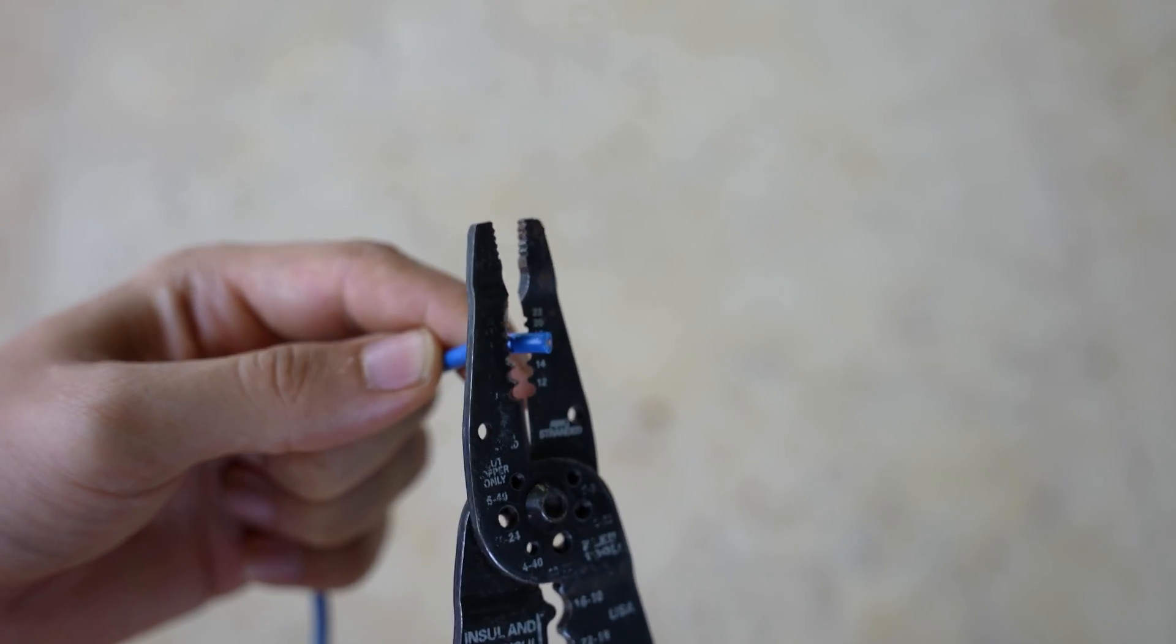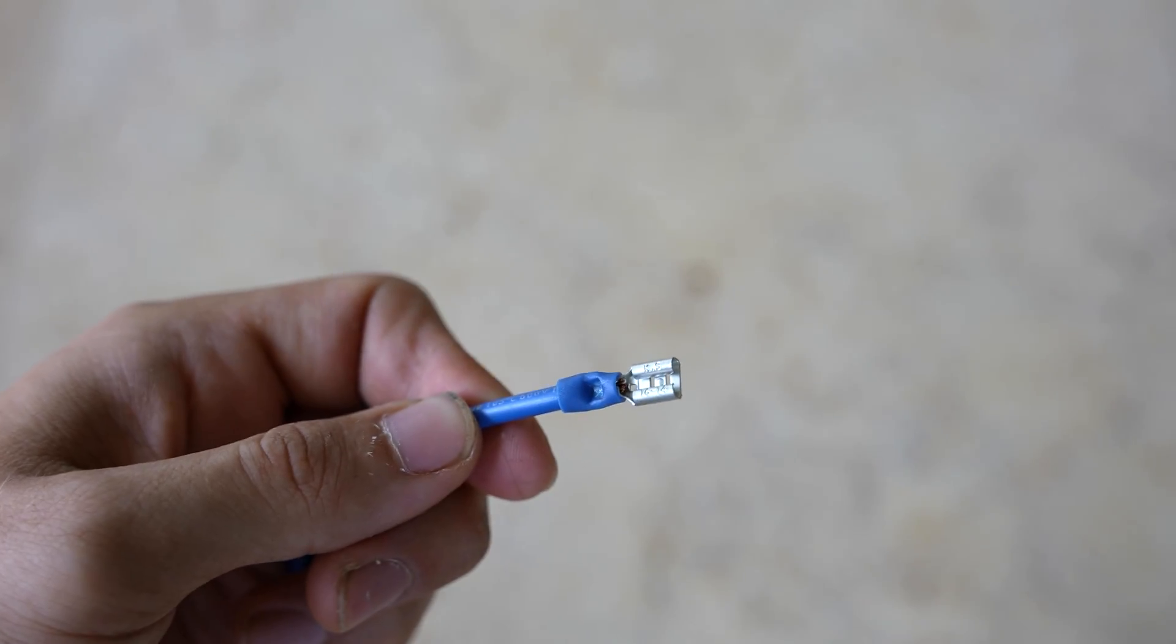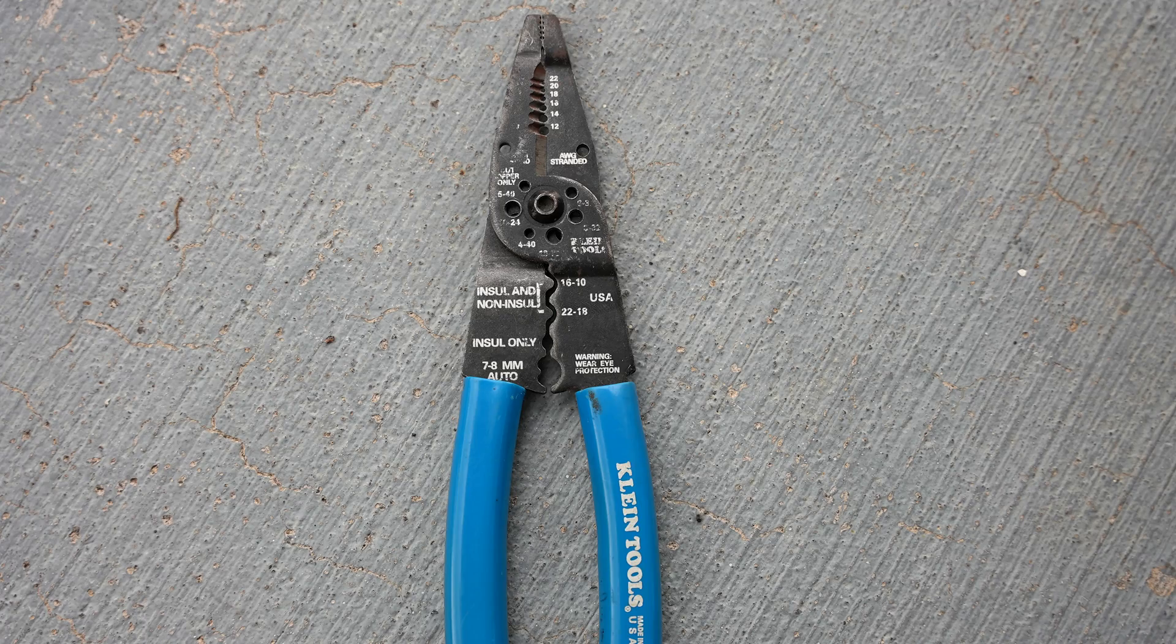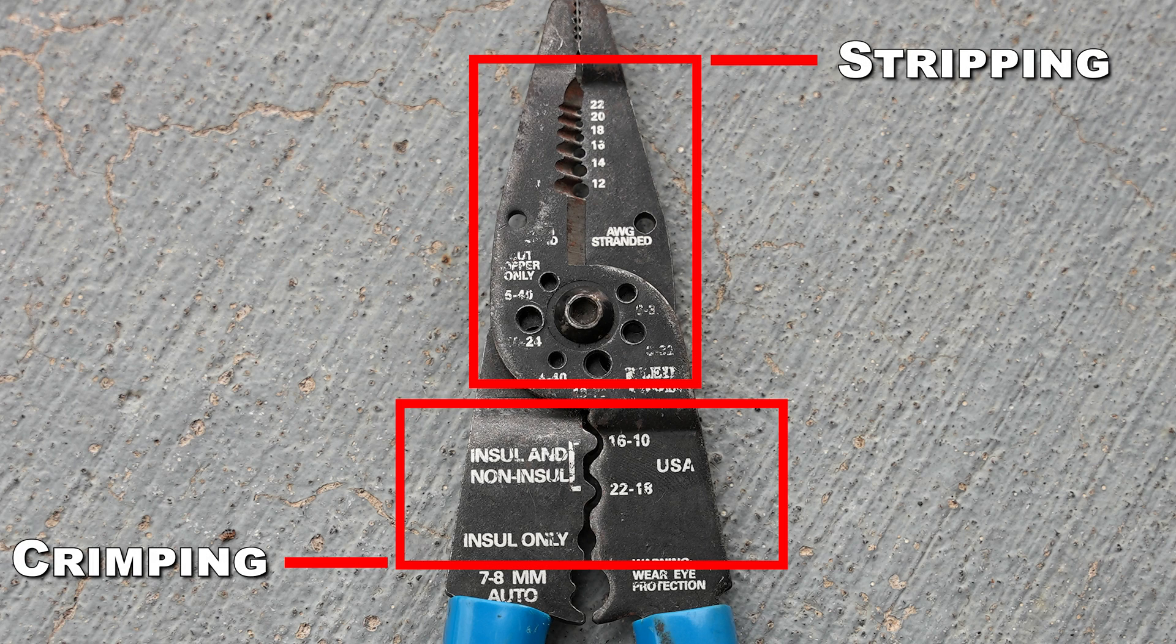To splice wires together, you will first need a tool that can strip and crimp wires and connectors. Optimally, it's best to have a pair of pliers that can do both. It makes cutting, stripping, and crimping various size wires much, much easier.